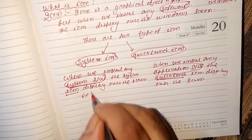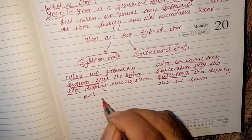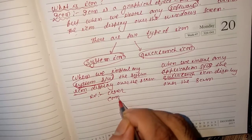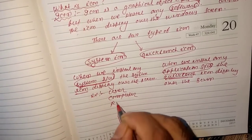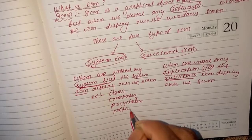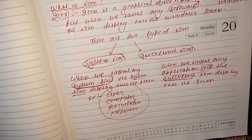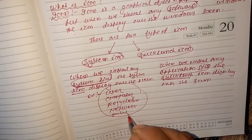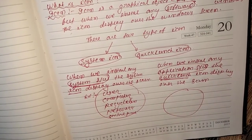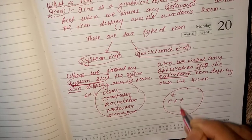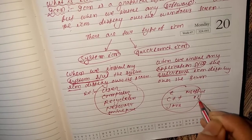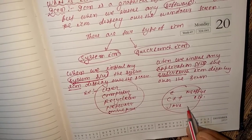System icon examples: User, Computer, Recycle Bin, Network, and Control Panel — these are called system icons. Quick launch icon examples: C, C++, Java, Motion, MS Office, etc. — these are called quick launch icons.